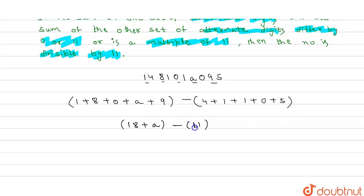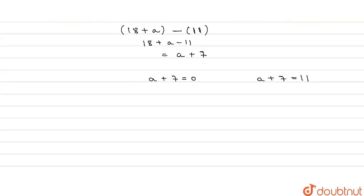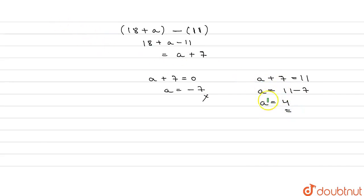The difference is 18 plus A minus 11, which equals A plus 7. So our difference is A plus 7. For divisibility by 11, A plus 7 must equal 0 or 11. If A plus 7 equals 0, then A equals minus 7, which is not possible. So A equals 11 minus 7, which equals 4. Therefore, the required value of A is 4.